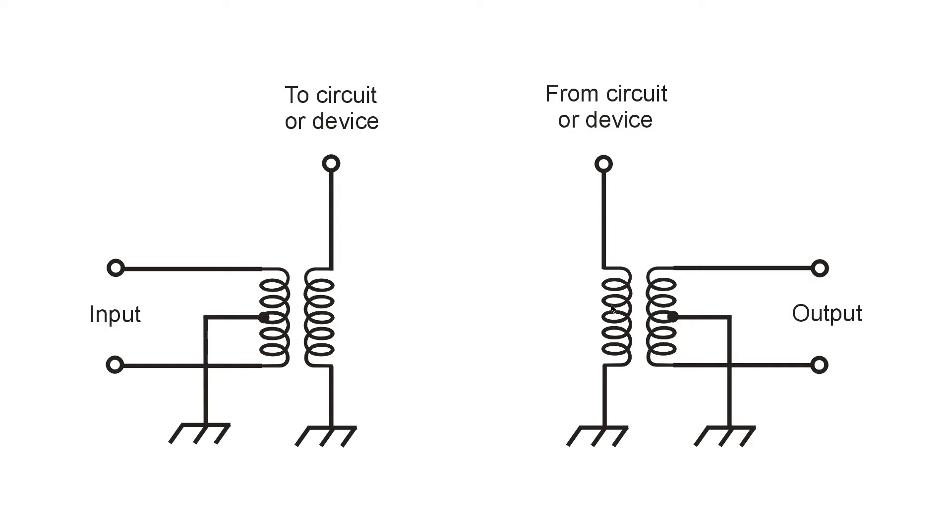Unbalanced means that you can't swap the two terminals and expect to get anything like the same result. Typically, an unbalanced circuit or system is single ended. One end grounded, one end carrying the signal.